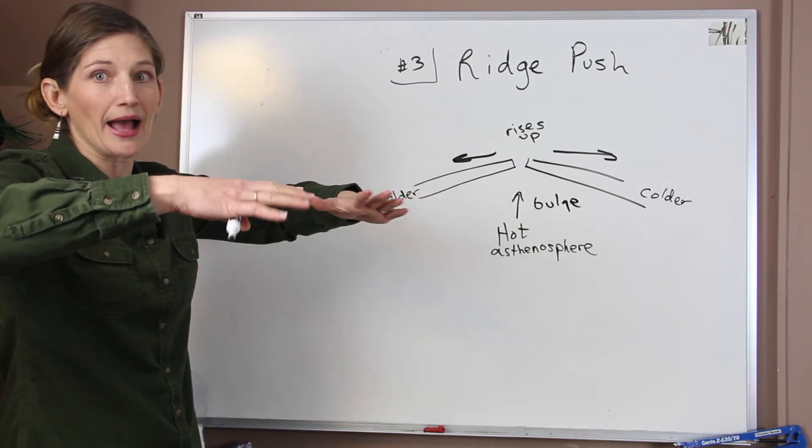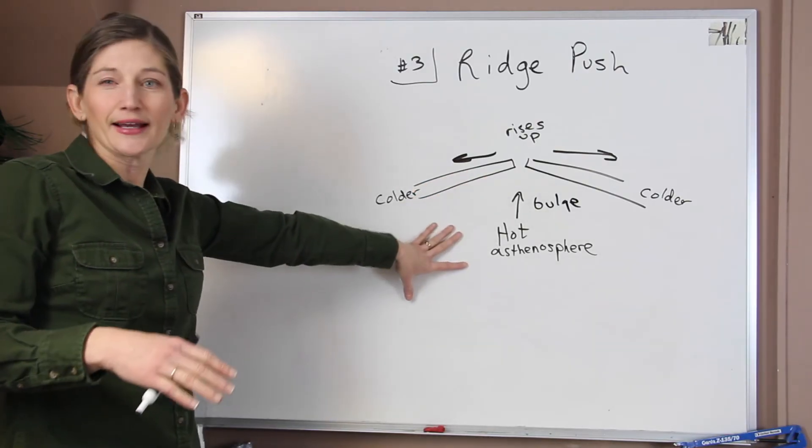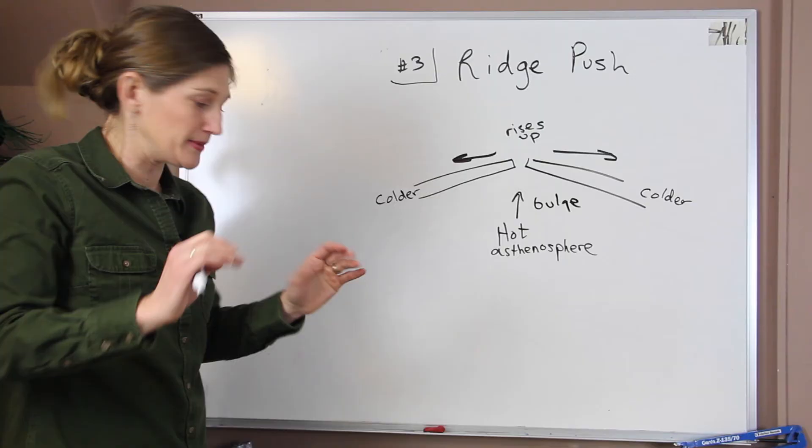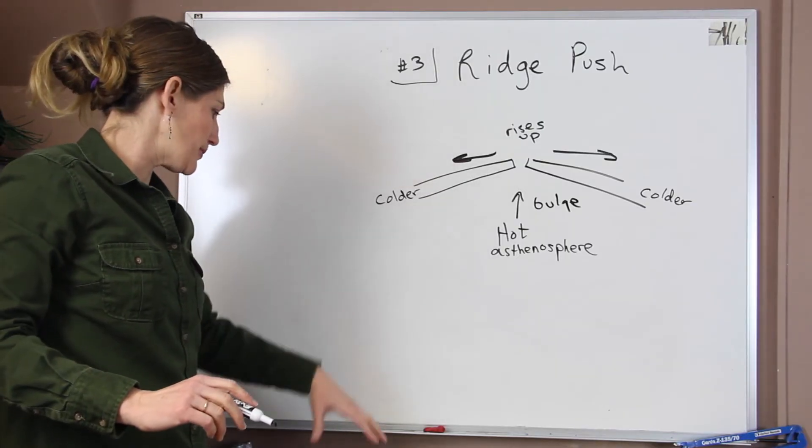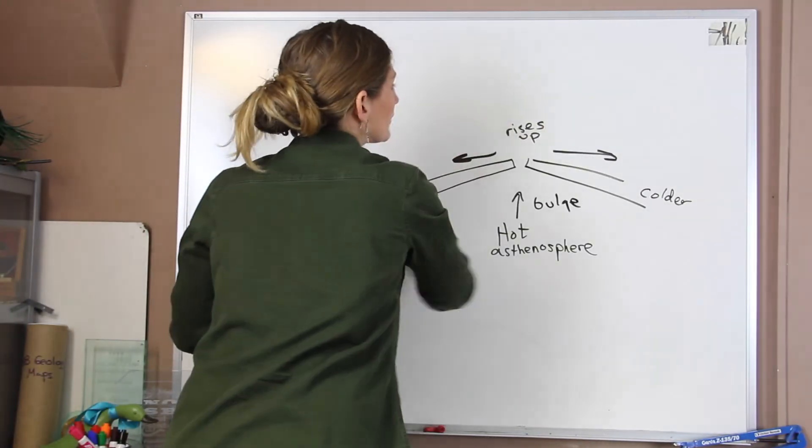When we think about Pangea, that big mass that came together. So why did it ever break apart? Well, it had some locations where there was hot asthenosphere kind of boiling up down below. That started to push it. Now the question is, can we put this all together? And what might that look like?